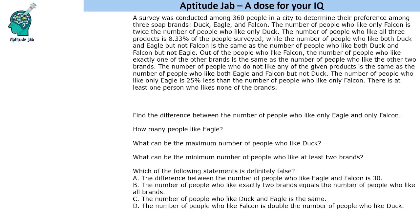Hello everyone, welcome to AptitudeJab. This is a set based on Venn diagram. It says that there is a survey conducted among 360 people to determine their preference among three soap brands: Duck, Eagle, and Falcon.